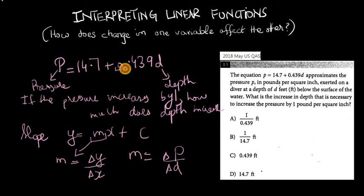In this case, m equals 0.439. So we know what m is: 0.439. We know what the change in p is: 1. So it's 1 divided by the change in d.